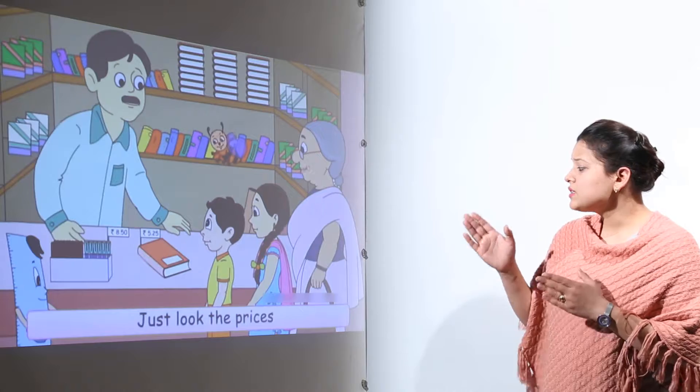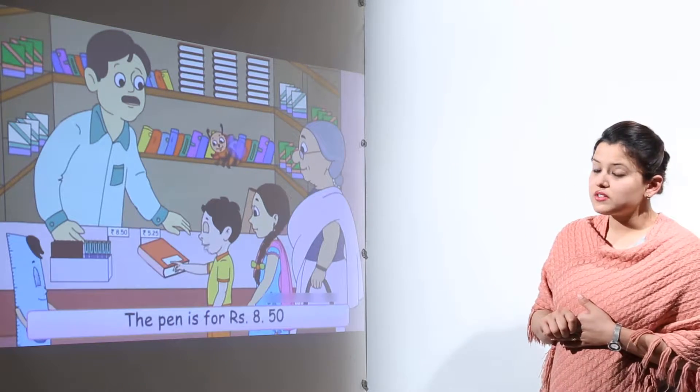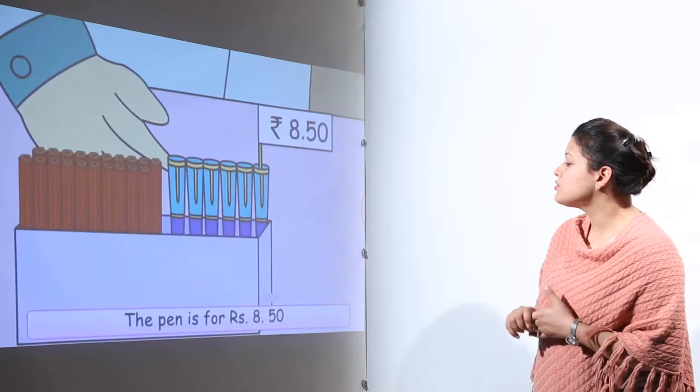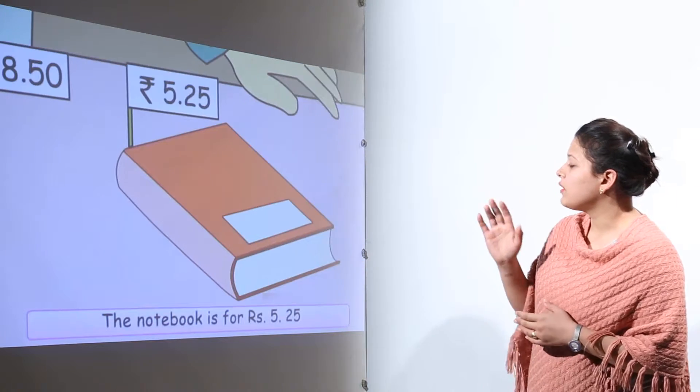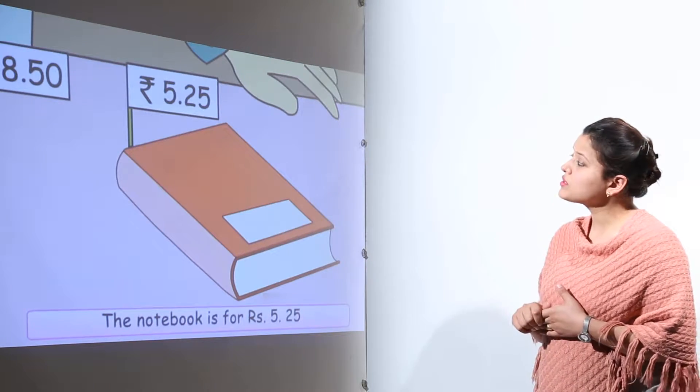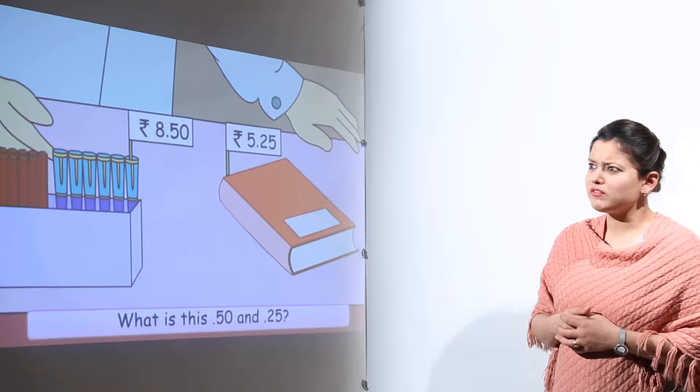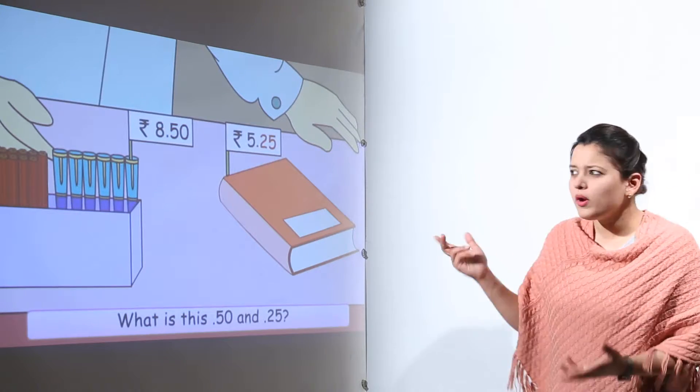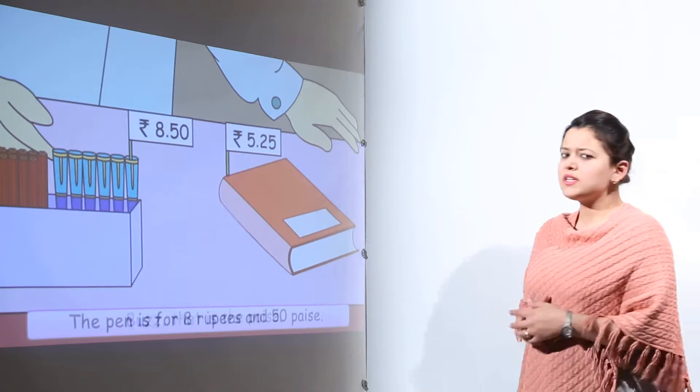They found the prices written on the different objects. Now here the pen was costing rupees 8.50 and the notebook was costing rupees 5.25. But what is this 0.50 and 0.25? We are not aware of this.